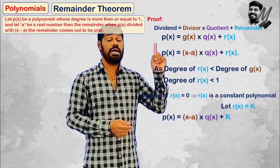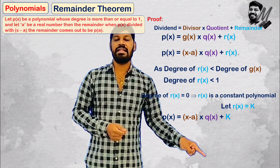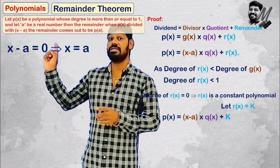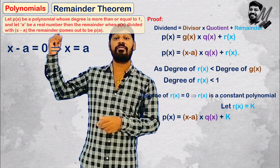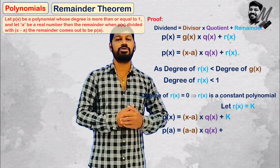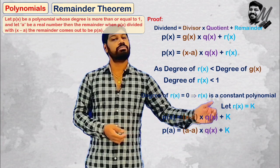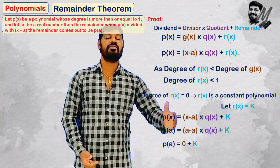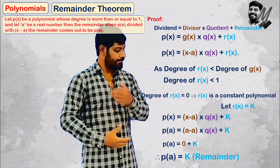So if P of x is equal to x minus a into Q of x plus k, where k is our remainder. Now if we substitute x equal to a: P of a is equal to a minus a into Q of a plus k. Since a minus a is zero, zero into Q of a is zero. So P of a is equal to k. Therefore, we have proved that the remainder is equal to P of a.